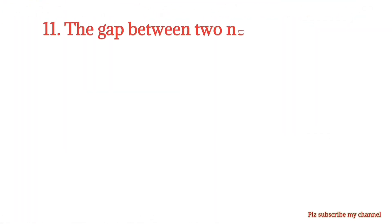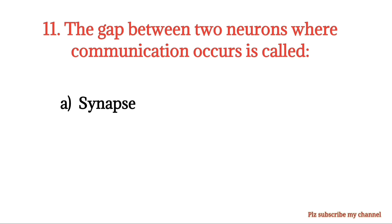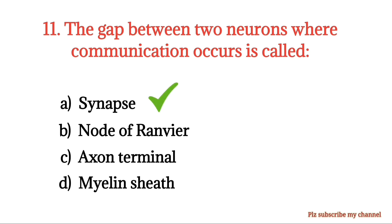MCQ number 11. The gap between two neurons where communication occurs is called: Option A: Synapse. Option B: Node of Ranvier. Option C: Axon terminal. Option D: Myelin sheath. The right option is Option A.